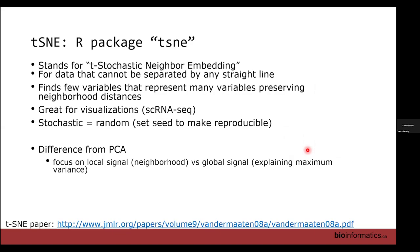What does non-linear mean? With PCA, we tried to draw a straight line through the data to explain maximum variance. But t-SNE and UMAP are meant for data that cannot be separated by a straight line. t-SNE stands for T-distributed Stochastic Neighbor Embedding. It is especially common in single-cell applications.